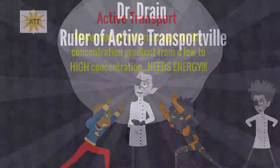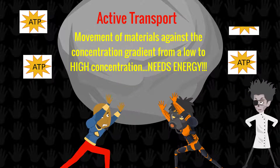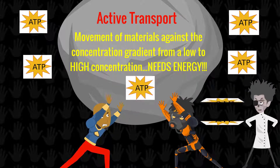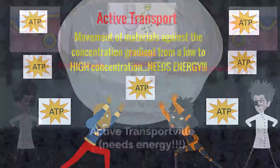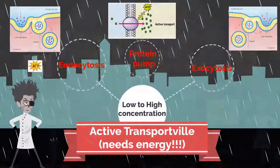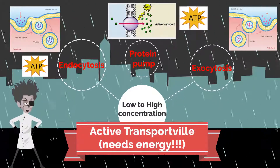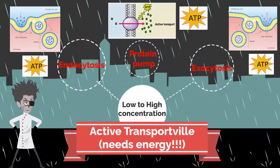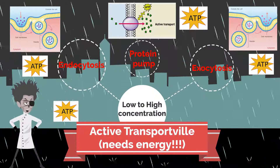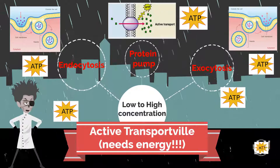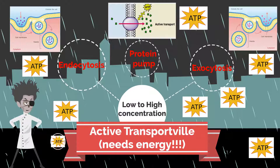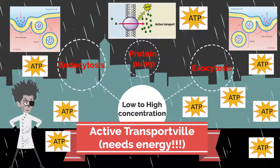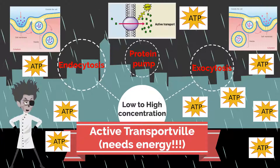And now on to active transport, which is the movement of materials against the concentration gradient from a low concentration to a high concentration. And yes, it does need energy. There are three types of active transport: endocytosis, protein pumps, and exocytosis. All three of these active transports have to use energy in the form of ATP to move materials against the concentration gradient from an area of low concentration to an area of high concentration. Energy must and will be used for these processes.